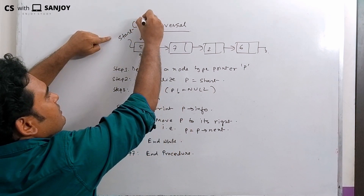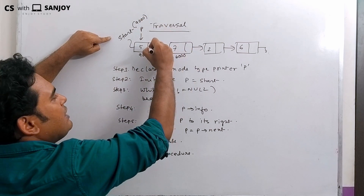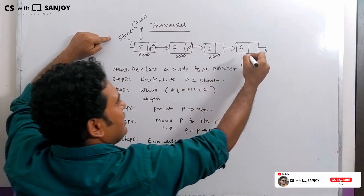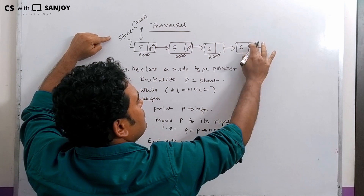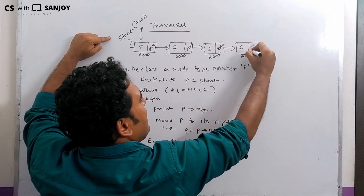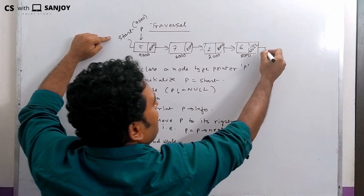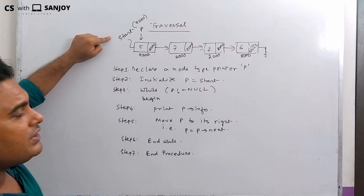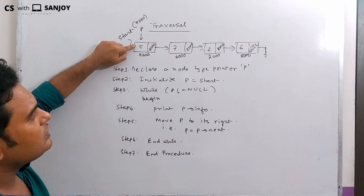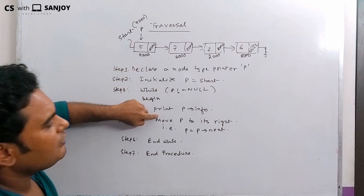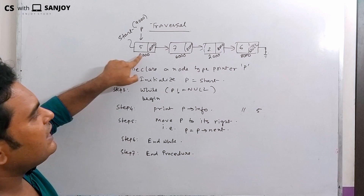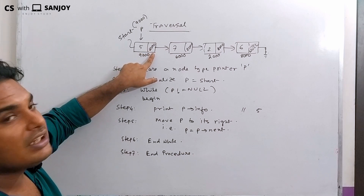The address is 9000, starting at node 1. Then address is 6000. The address is 2000. Then address is 8000. The last part is obviously null. Now print P info — this line will print 5 first. Now move P to its right: P equals to P next, P next is 6000, P moves right.